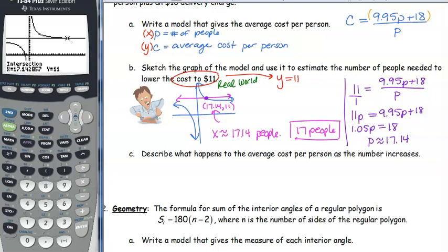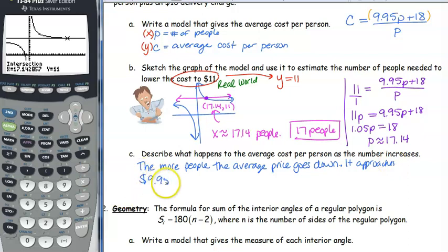It's never going to get below $9.95. It's never going to get to zero. Because every person has to pay that $9.95 for their plate for dinner. What we're splitting up is that $18 service charge. If I have a thousand people, they're not even paying a penny a piece for that $18 service charge, but they're still having to pay that $9.95 for their meal. So the more people, the average price goes down. But the most important part is noticing that it approaches $9.95 per person, but never reaches. That's that asymptote.